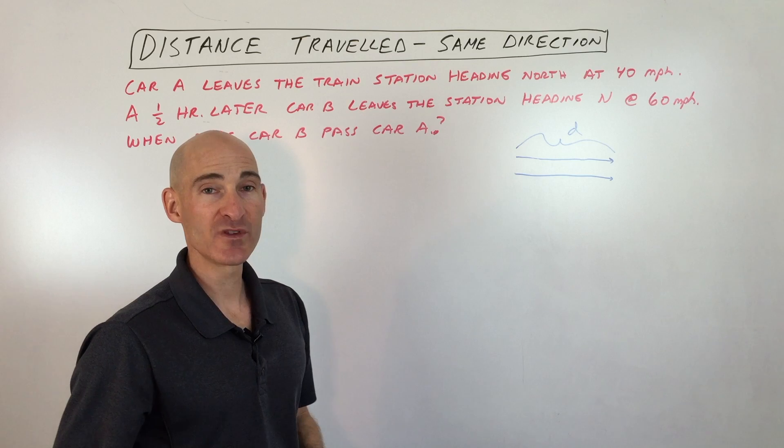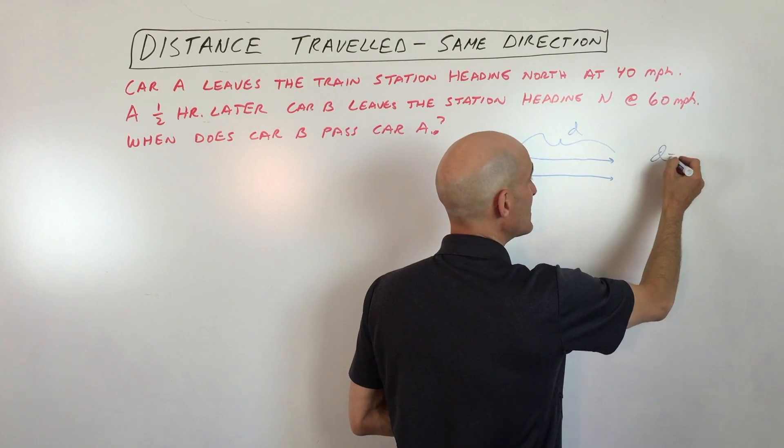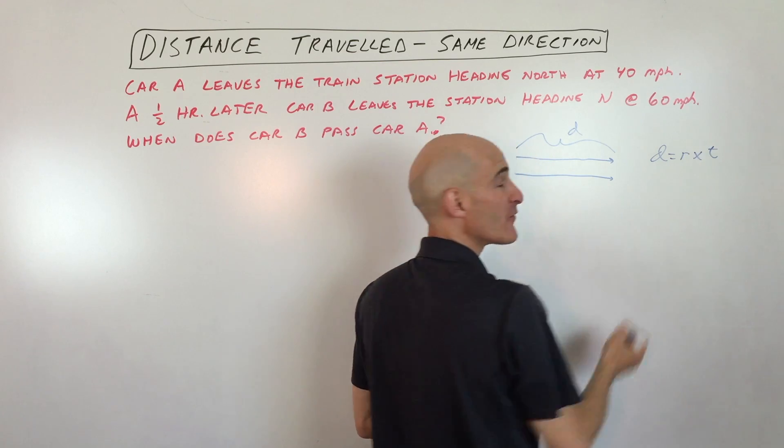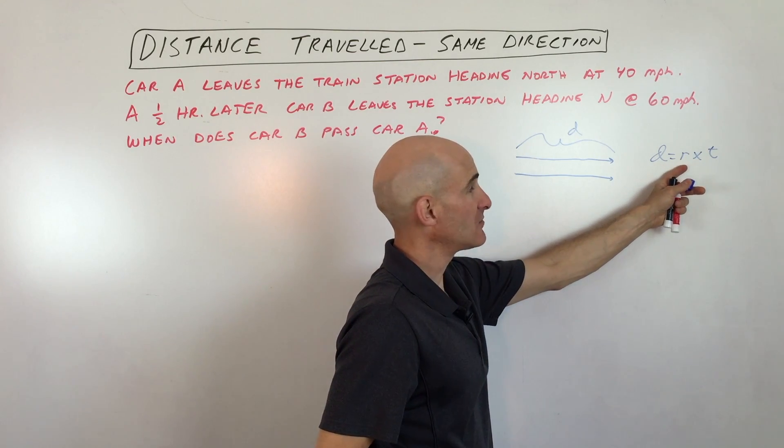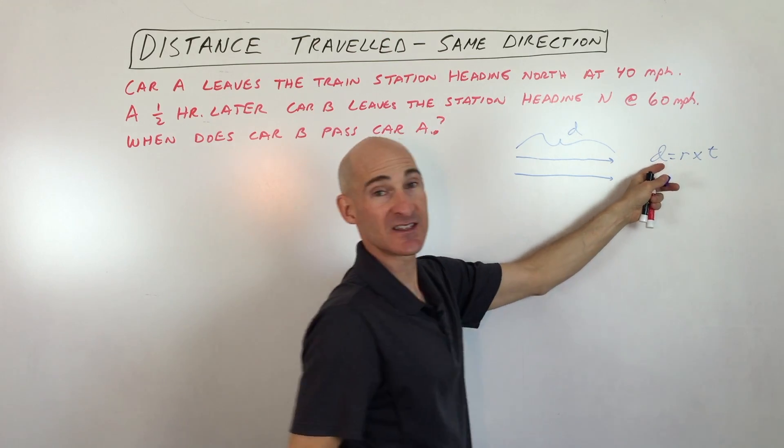And one of the key formulas that you want to know when you're doing these problems is the distance equals rate times time formula. So it's the rate, which is the speed, for how long. You multiply those together and you get the distance traveled.